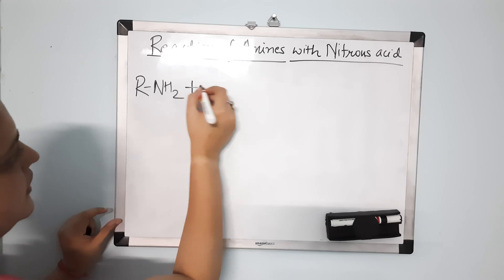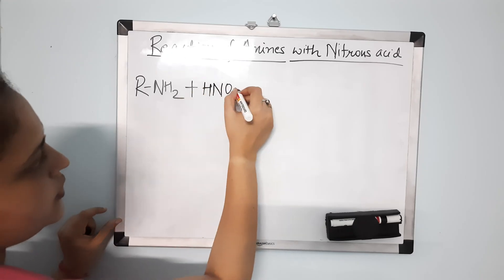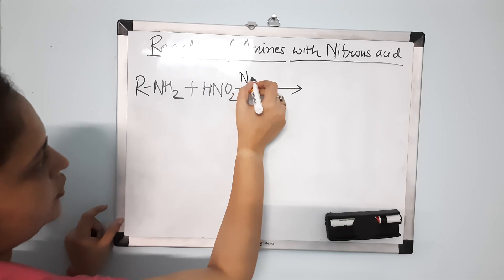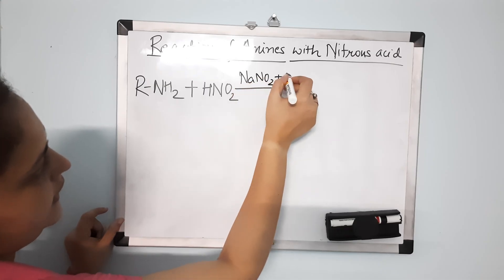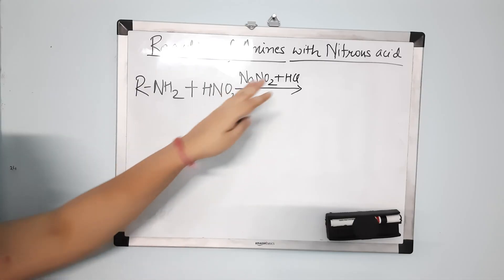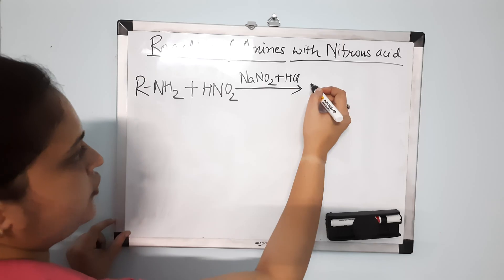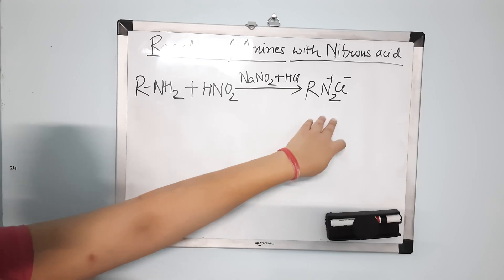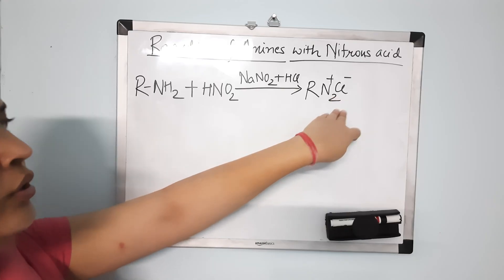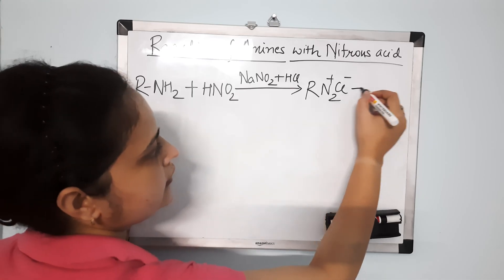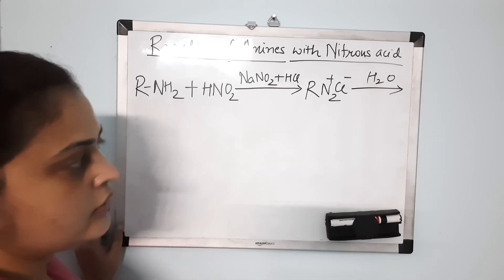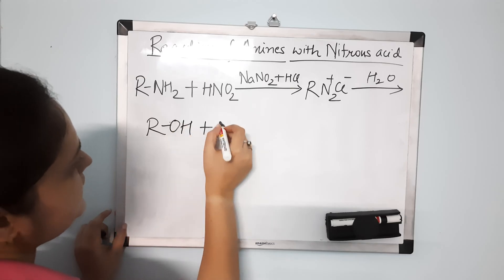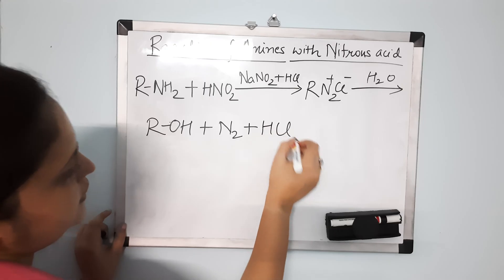It reacts with nitrous acid, HNO₂. This HNO₂ is formed in situ — in the reaction mixture of NaNO₂ (sodium nitrite) and HCl. First, a diazonium salt is formed: RN₂⁺ Cl⁻. This diazonium salt is unstable, so what will now be formed?